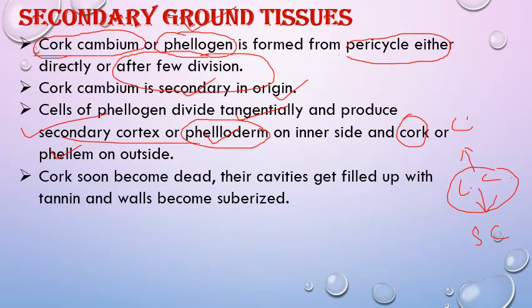Cork cells become dead. Their cavities are filled with tannins and other wall material, and their cell walls get suberized. Due to deposition of suberin, these cells become dead. They are hard and provide mechanical support and help in preventing water loss — these are the main functions of cork.